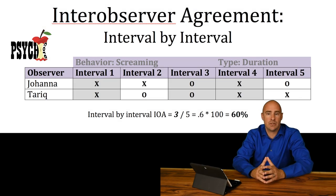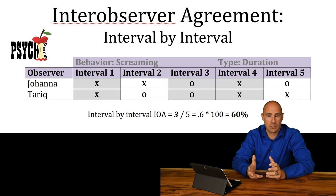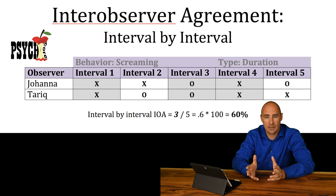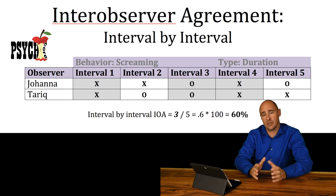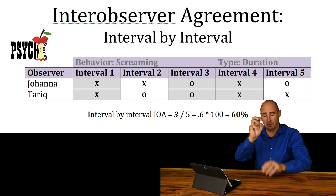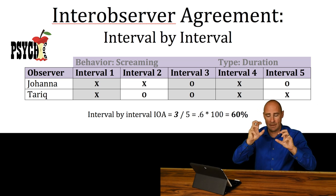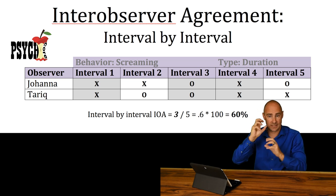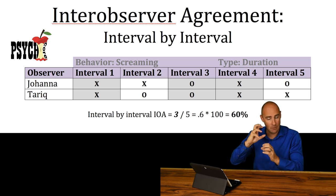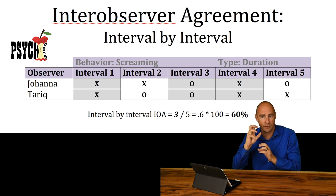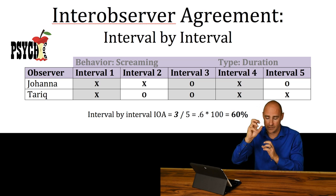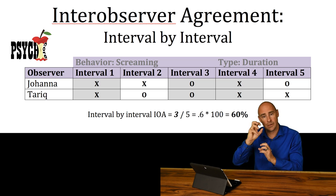This is used when you do a partial recording method or a whole interval recording method. All you do is compare the intervals to each other. So you've got two people making recordings about the same interval time. Did the behavior happen at all during the first two minutes? Yes. No — they don't agree.